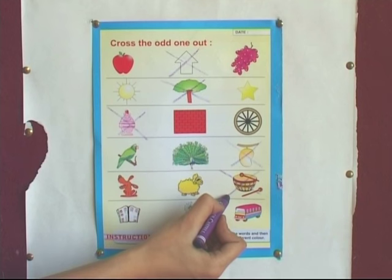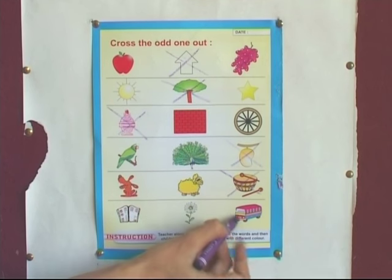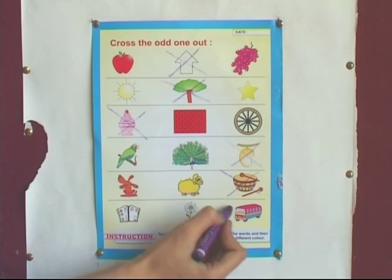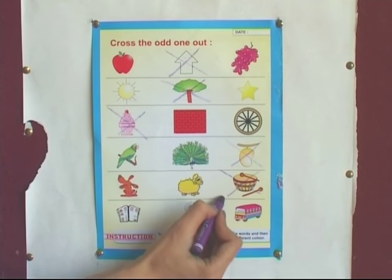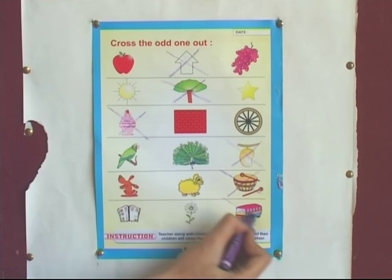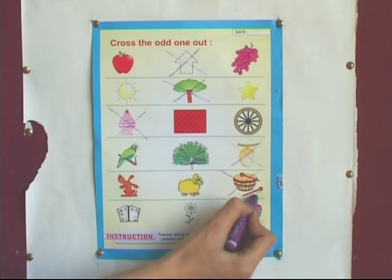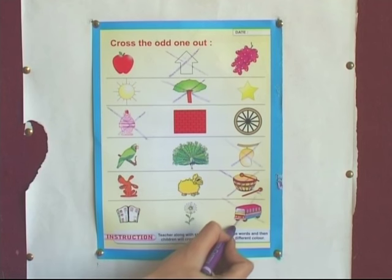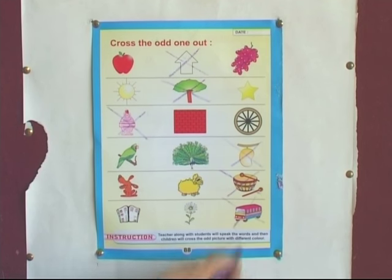In the last set, we can see a book, flower, and a bus. Book and bus have the similar sound of alphabet B. So, we will cross out the flower.